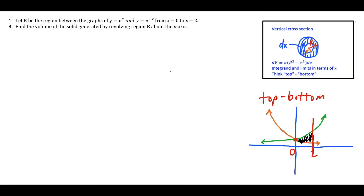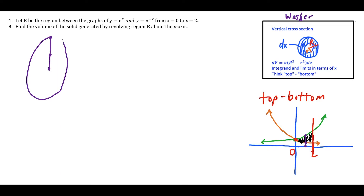For question 1b, we want to find the volume of the solid generated by revolving R about the x-axis. With the x-axis as our axis of revolution, the cross section goes from the x-axis all the way to the green curve y equals e to the x. There's a space between the x-axis and the first curve, so our cross sections are going to be washers. A washer requires two radii, and this cross section is a vertical slice with width dx.